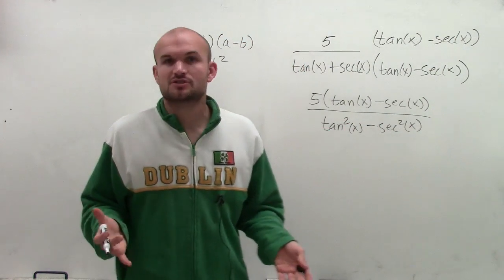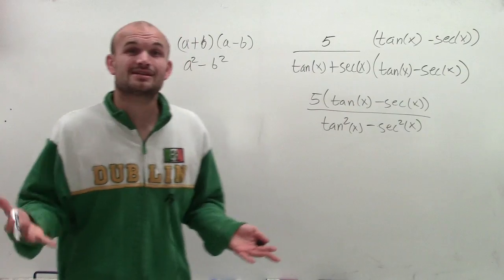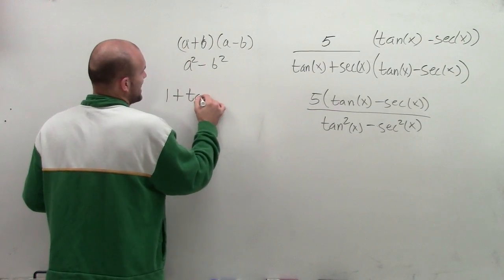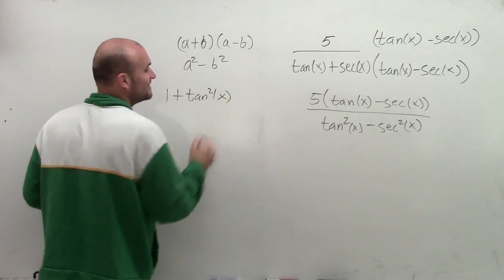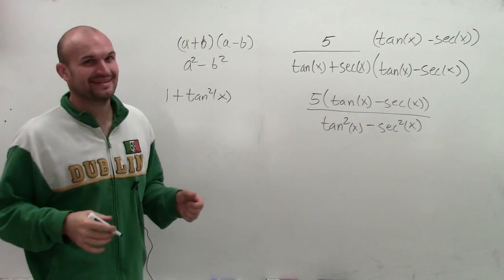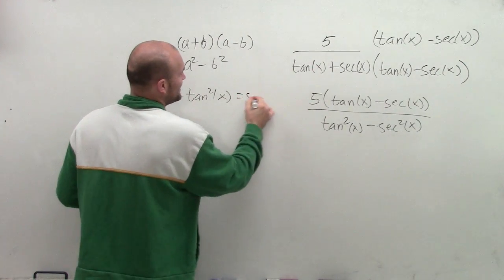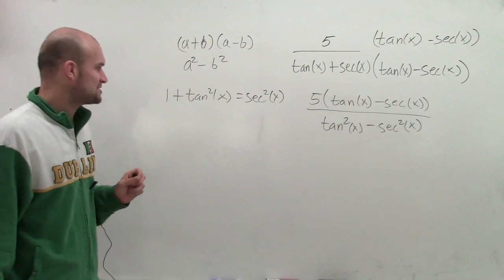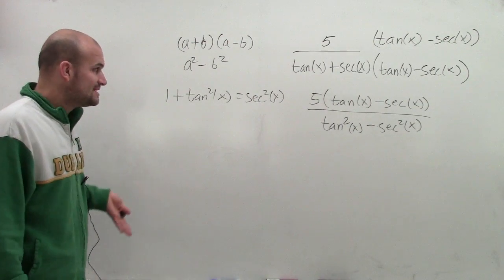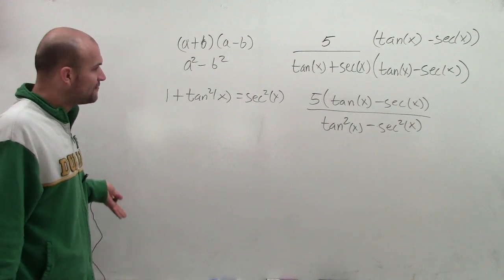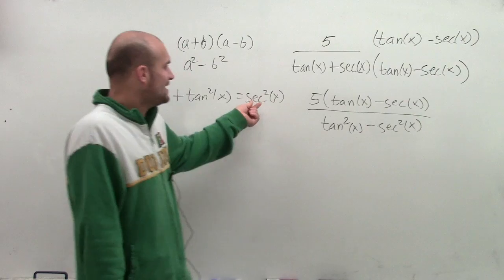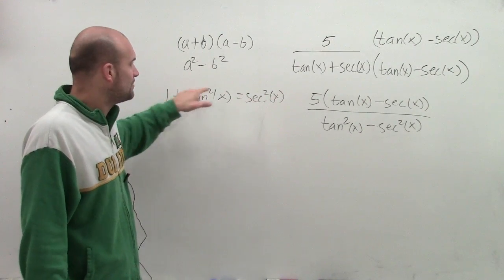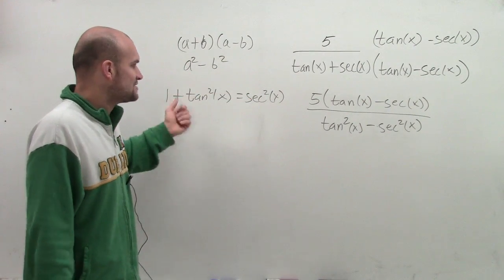Now, looking at the difference of two squares in the denominator, how does this help me simplify? By using the Pythagorean identity — we need to make sure we know these identities — we know that 1 plus tangent squared of x equals secant squared of x. I can rewrite secant squared of x as 1 plus tangent squared of x.